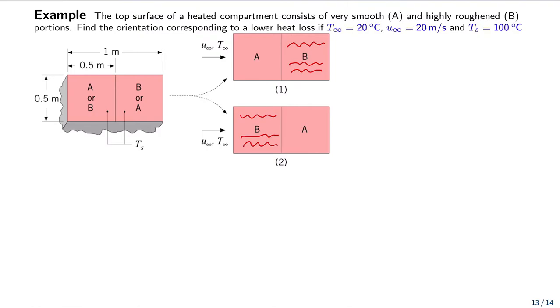The first step, according to our steps for the analysis of convection surface, is to recognize what type of geometry do we have. In this case it's obvious that it's a flat plate geometry.